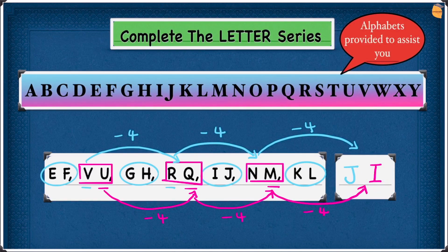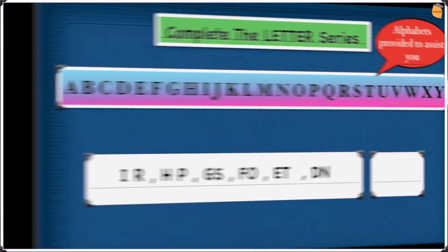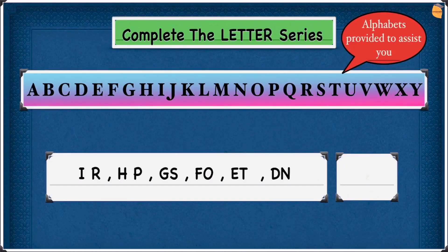Well done guys! Now let's go to our final example. So I to H — let's look at the first letter. Looking at the alphabet, I is here and H is here. We have to move one step backwards, so that's going to be minus 1. Write minus 1.